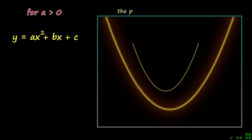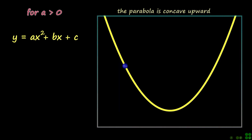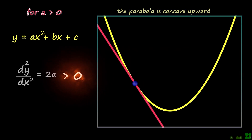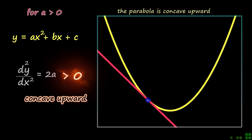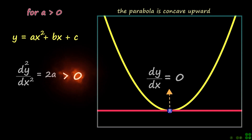For a being positive, the second derivative of the quadratic function is also positive. And the graph of the function in this case is concave upward, as shown. Again, the first derivative is zero at the turning point of the function. And in this case, this is the minimum point, as shown.